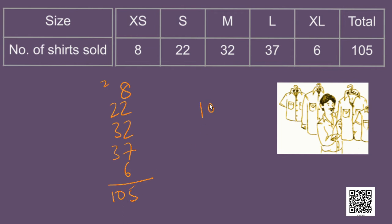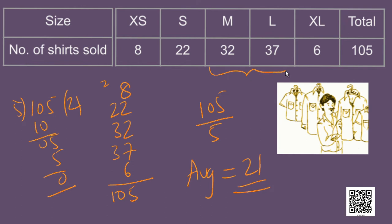So, the total is 105 divided by, we have five different sizes. So, that gives, the average pieces of each size sold is 21. So, what do you think children? Should he order 21 pieces of each size? Will that be a good decision? No, isn't it? As you can see, the sizes M and L are being sold more compared to other sizes. So, using mean in this kind of scenario may not be suitable. Instead, what he can do is, he can choose to order more of these sizes and fewer of the other sizes based on this information.